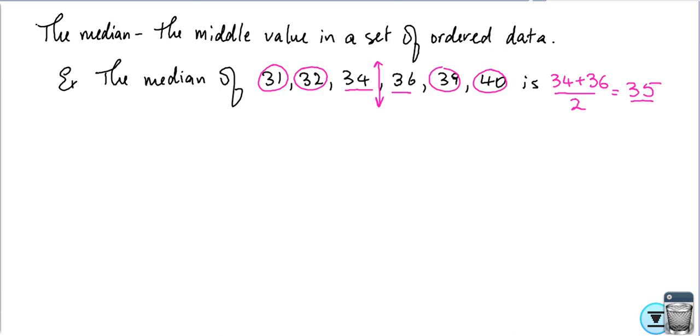We said also that we could find the median's place by using n plus 1 over 2. n was the number of values. In this case, I have six values, so 6 plus 1 over 2, so it should be the 3.5 value. I'm going to search for the 3.5 value. This is the first value, second, third, fourth. In between 3 and 4, there is 3.5, so it lies in between 34 and 36, and between 34 and 36 there is 35.